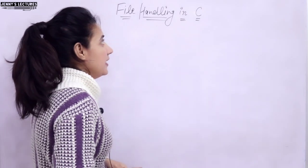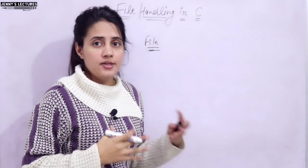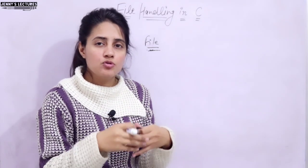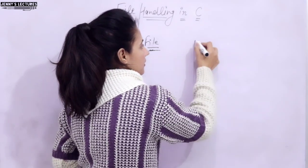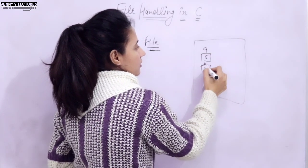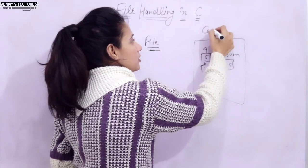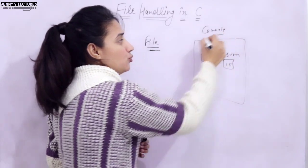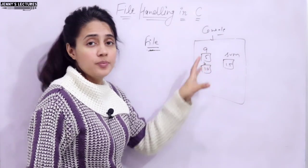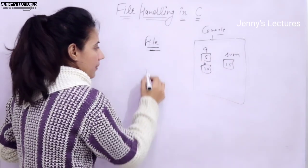Now, what is file handling and what is a file in C? Whenever you write a program and run it — say you're adding two numbers A and B, giving 5 and 10, so the sum is 15 — that output is displayed on the console screen. Whenever you run a program, it gets loaded into RAM memory.